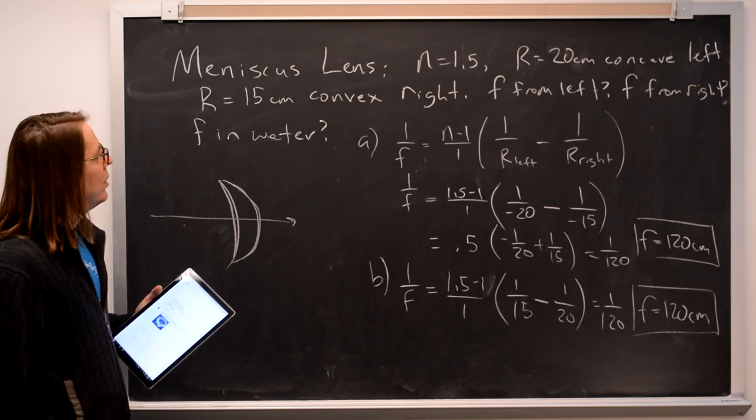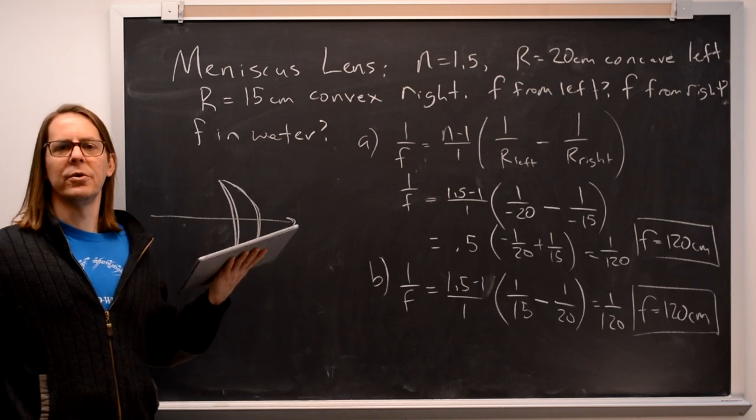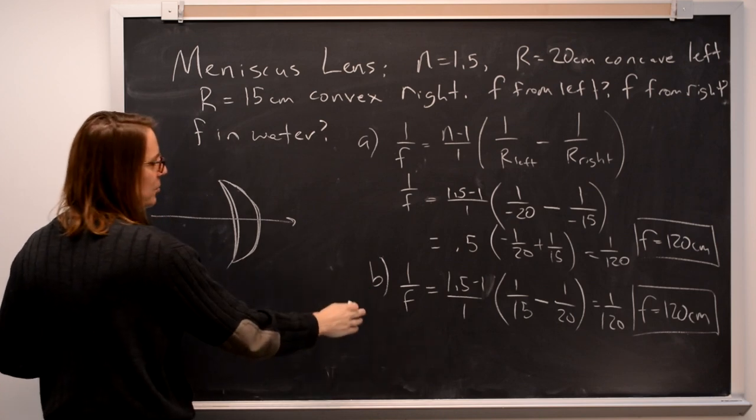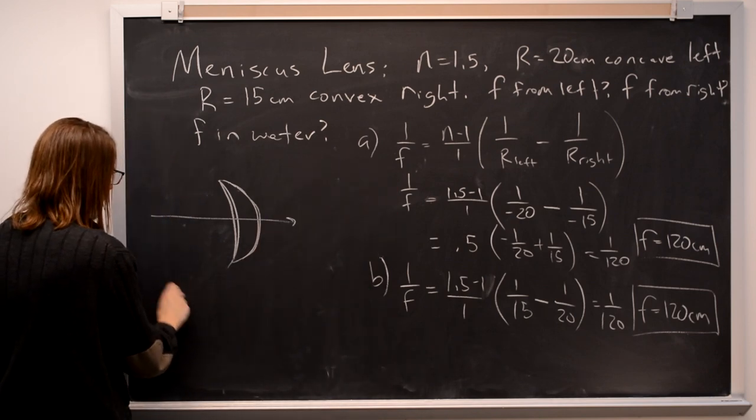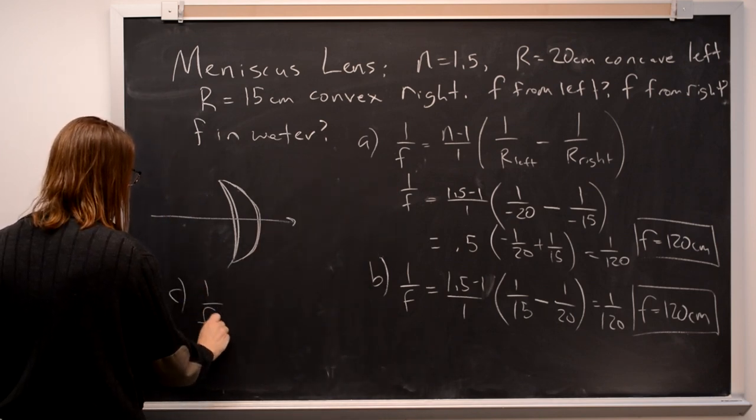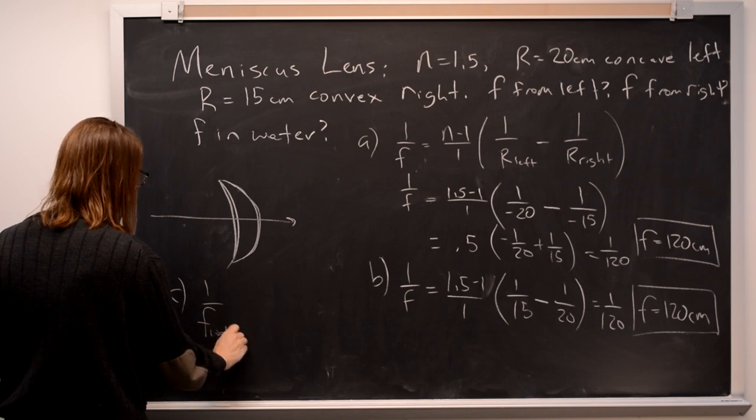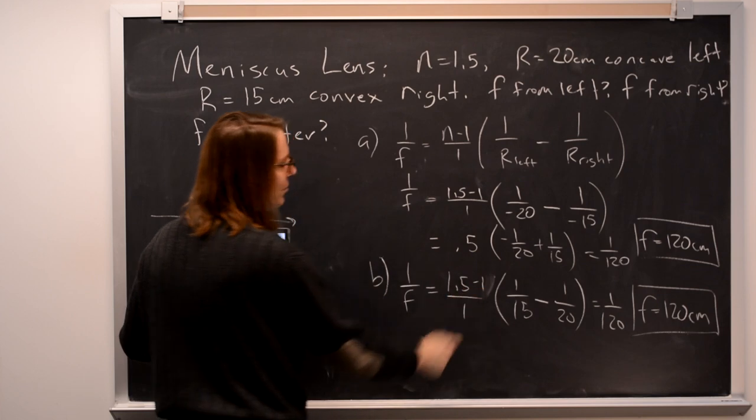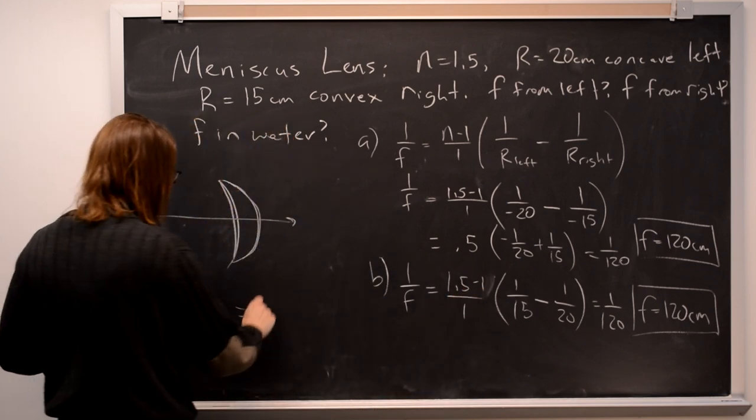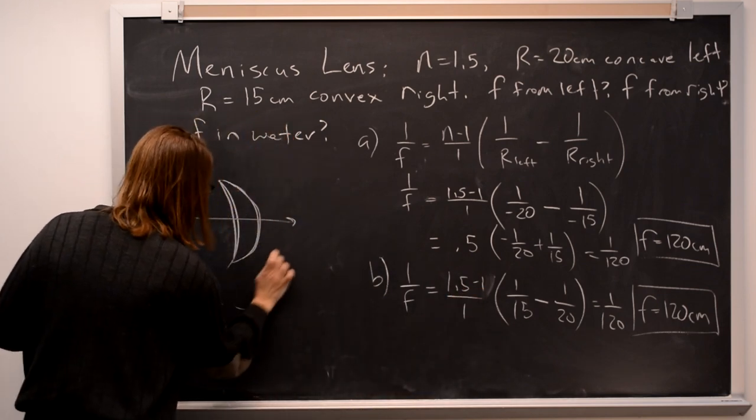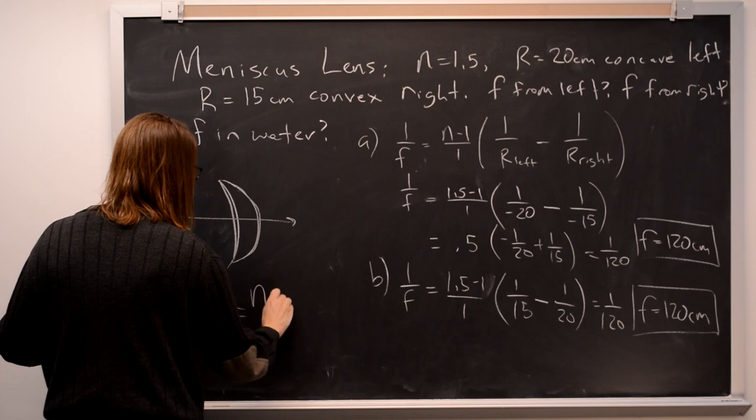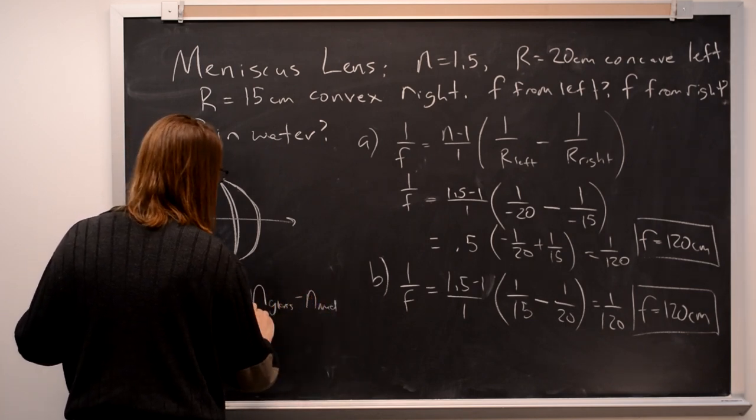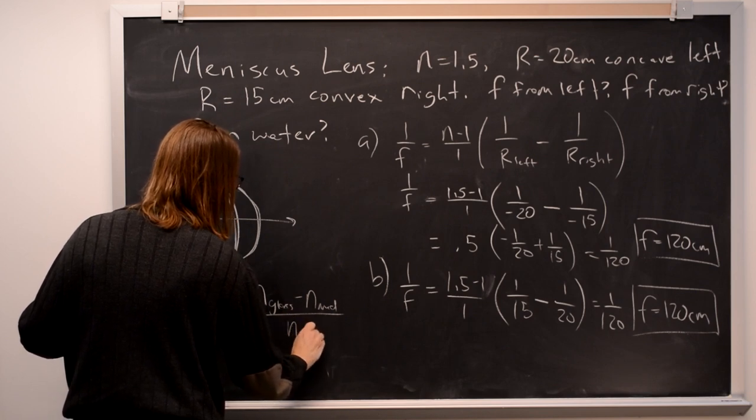Part C is what if you put it in water. What's the focal length if you put it in water? It's a little different. Let's go with this case because it was less negative. 1 over f in water. Well, the geometry is all the same, but this is different. The real formula is n of the glass, or whatever the lens is made of, minus n of the medium over n of the medium.